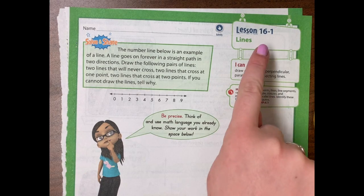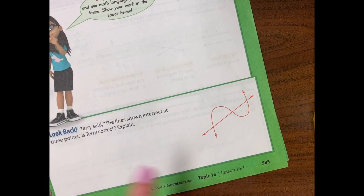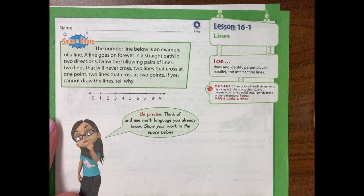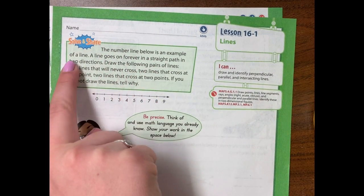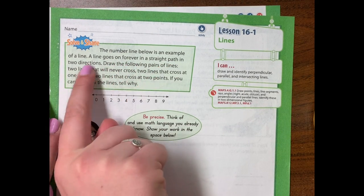All right, so today we are on lesson 16.1 on page 585 of your packet. We're going to do the solve and share. It says, the number line below is an example of a line. A line goes on forever in a straight path in two directions.